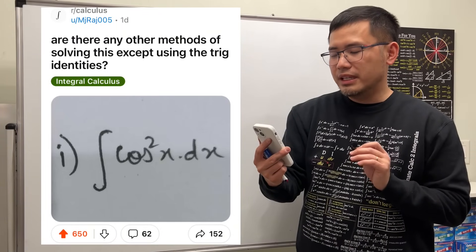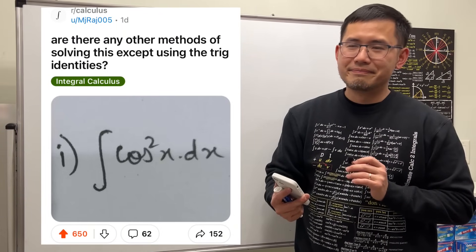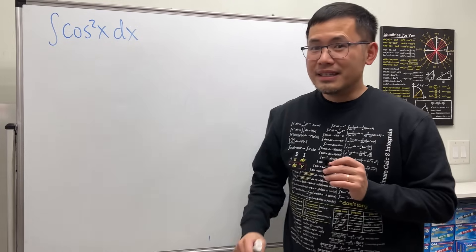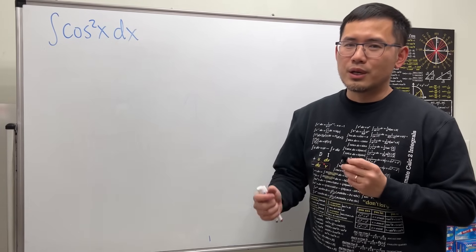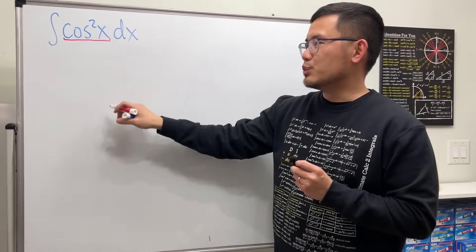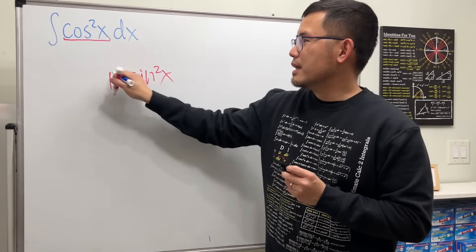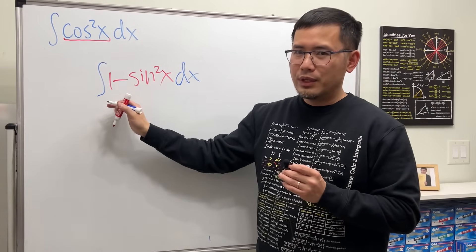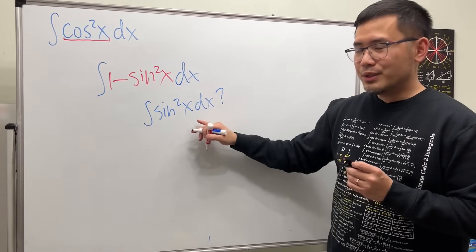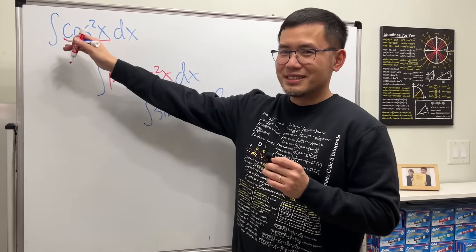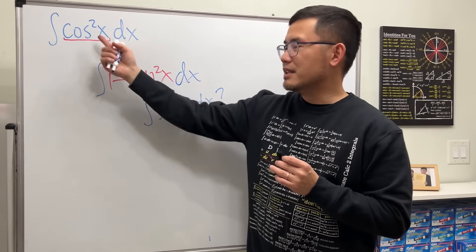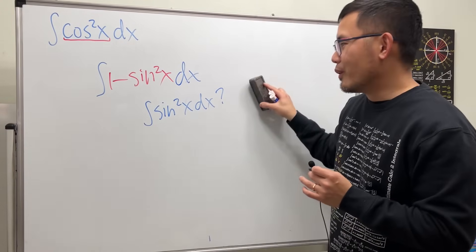Are there any other methods of solving this except using the trig identities? We have the integral of cosine squared x. In a usual calculus 2 class, do not replace this with 1 minus sine squared x — yes, we can integrate 1 very easily, but how do we integrate sine squared x? We run into a similar situation, so this identity does not help.